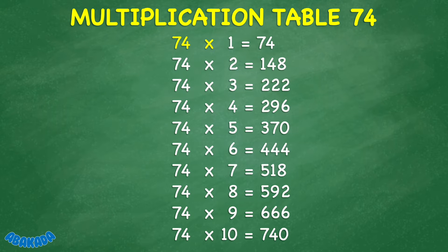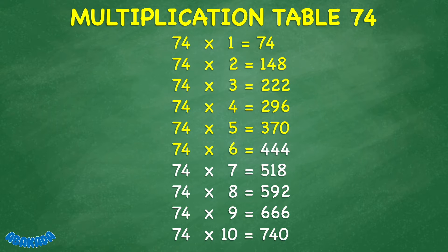74 times 1 equals 74. 74 times 2 equals 148. 74 times 3 equals 222. 74 times 4 equals 296. 74 times 5 equals 370. 74 times 6 equals 440. 74 times 7 equals 518. 74 times 8 equals 592. 74 times 9 equals 666. 74 times 10 equals 740.